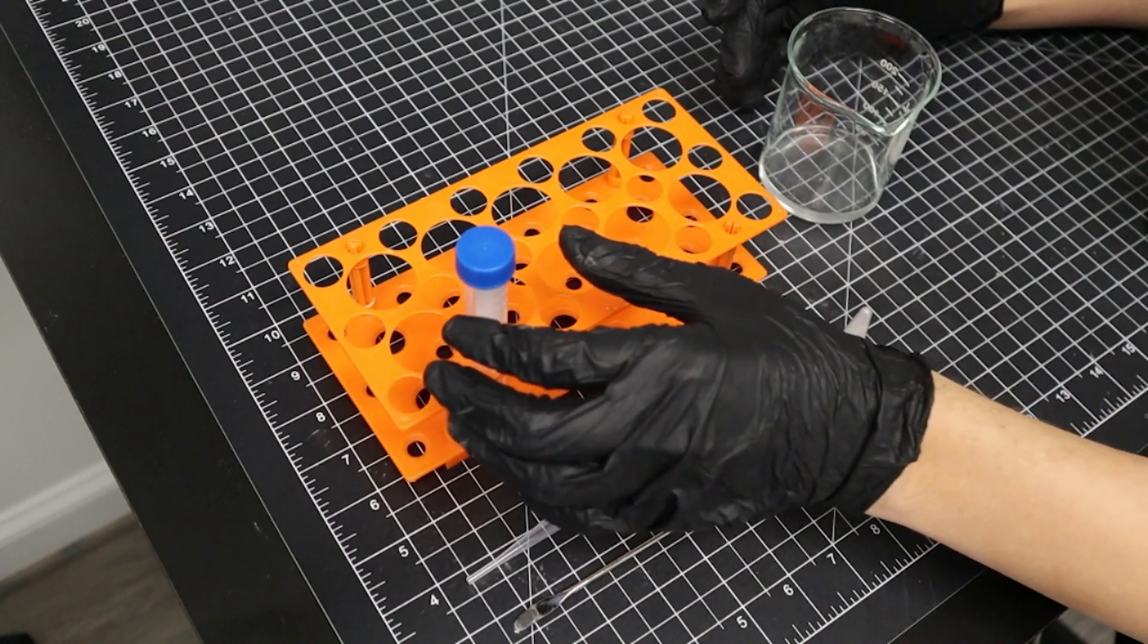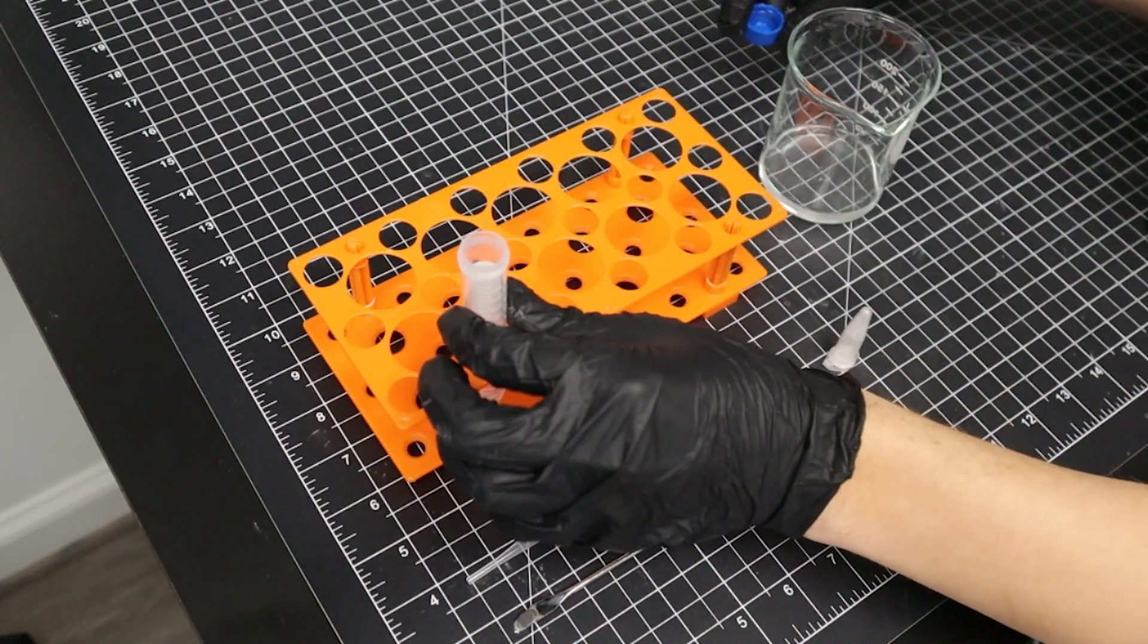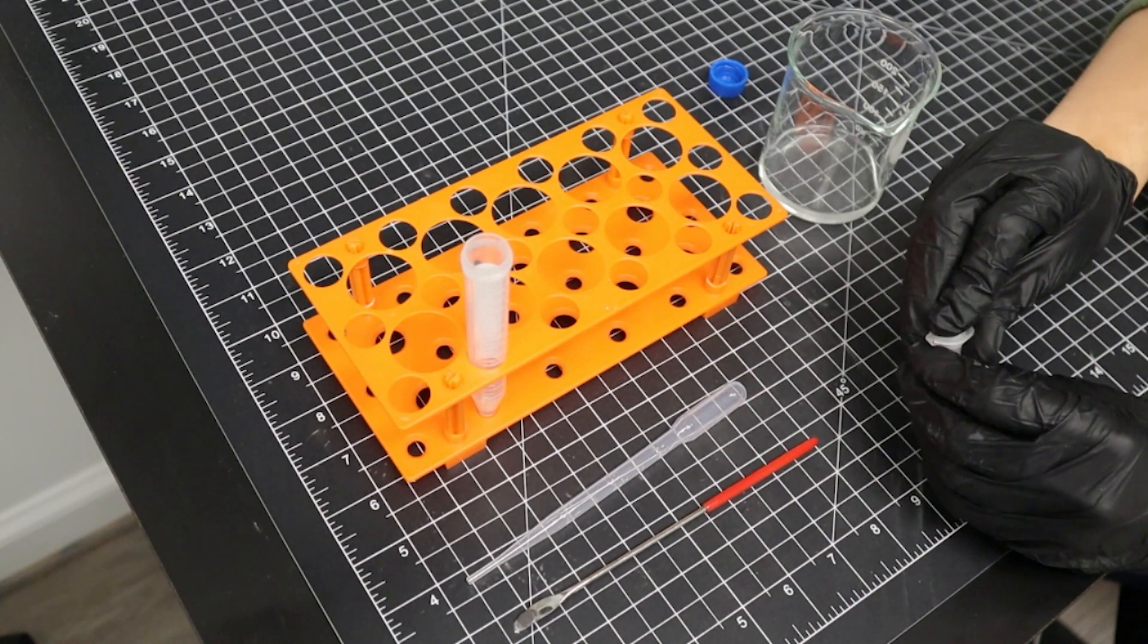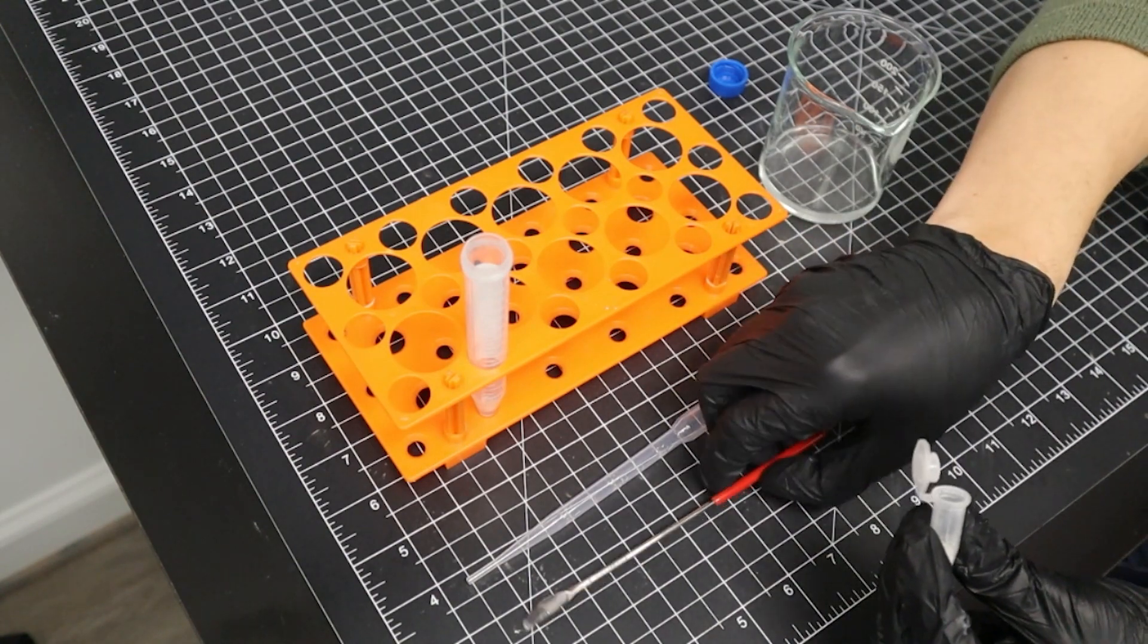We'll start by loading our vial with powder. We don't need a large amount of powder to create a solution, so just fill the tip of the metal spoon with powder, and then deposit into the vial.